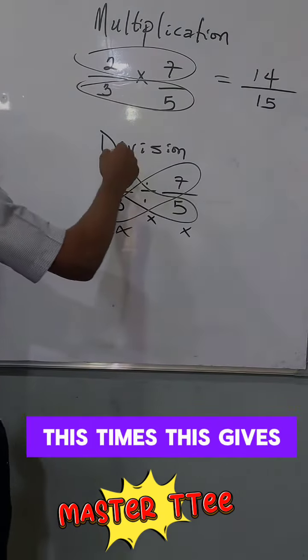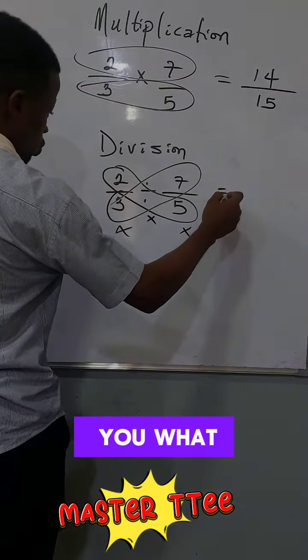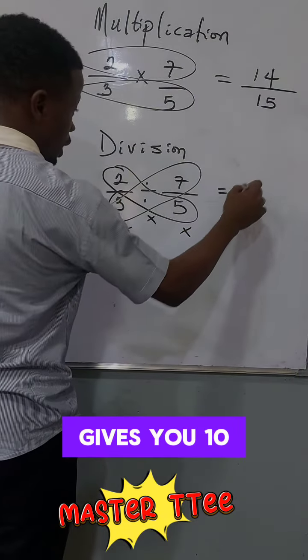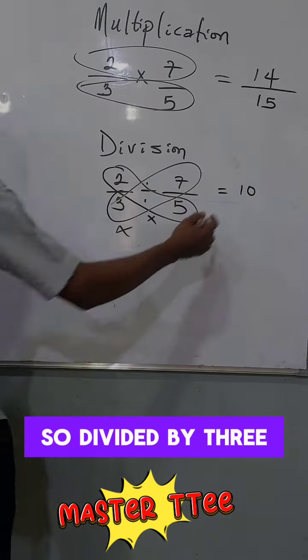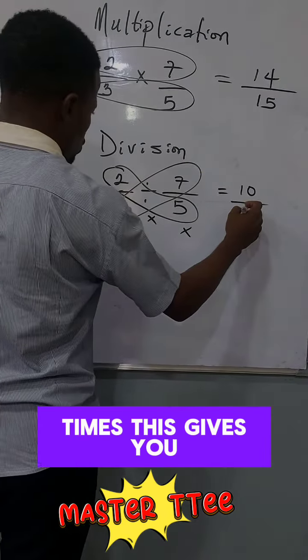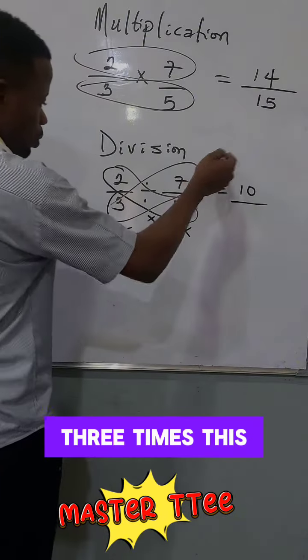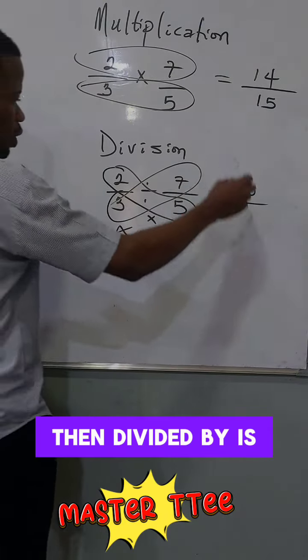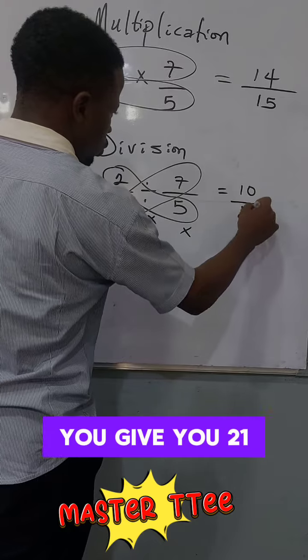Always start with the rights. This times this gives you what? Gives you 10. So divided by 3 times this gives you 3 times this. This and this then divided by this gives you 21.